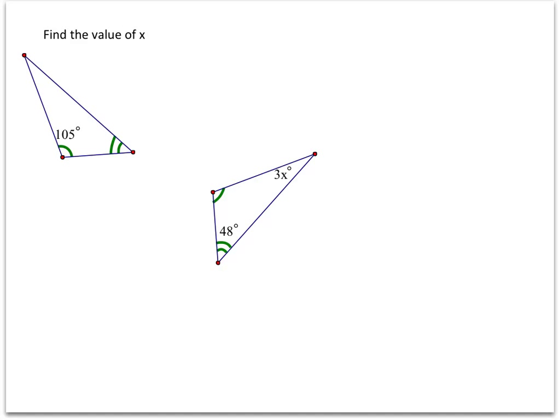All right, we're going to find the value for x. So, we notice here first that 105 degrees and this angle here both have matching tick marks, so that indicates that they are congruent. So, what we can say is that this angle is 105 degrees. Now, using previous lessons, we know that the interior angles of a triangle all add up to equal 180 degrees. So, we can write the expression 180 degrees is equal to 105 plus 48 plus 3x. Now, we just have to combine and simplify to solve for x.